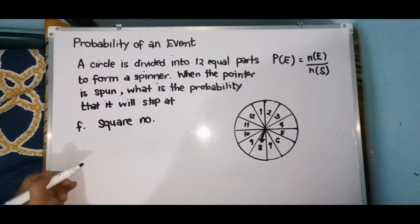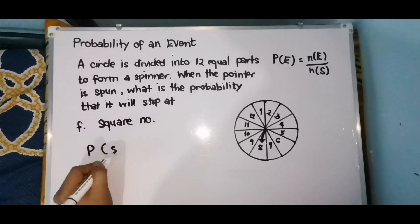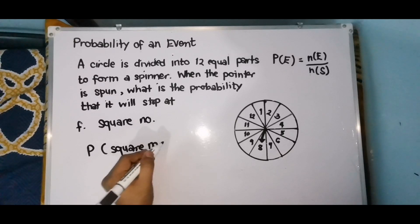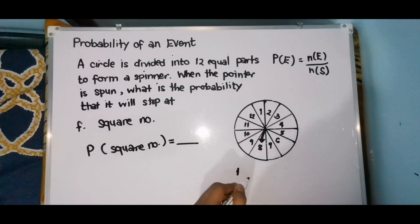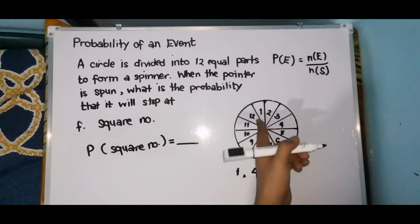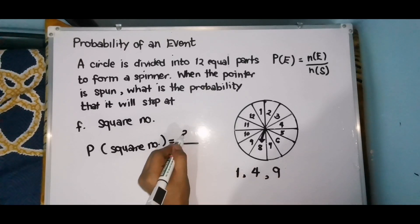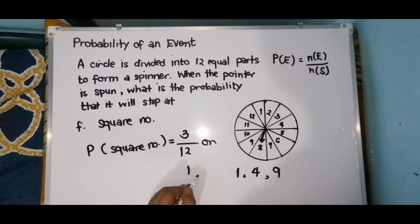For our last event: what is the probability that it will stop at square numbers? That is the probability of getting square numbers. What are those square numbers? 1 squared is 1, 2 squared is 4, 3 squared is 9, 4 squared is 16. But since ang pinaka-maximum number na makakuha natin ay 12, hindi na nakakasama yung 16. Therefore, ang mga square numbers ay 1, 4, and 9 — and there are 3. So 3 over 12, or in lowest term, we have 1 fourth.